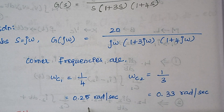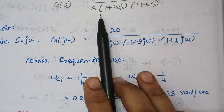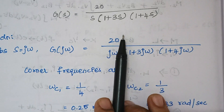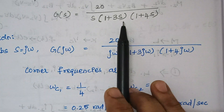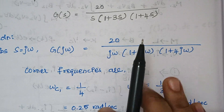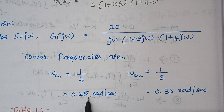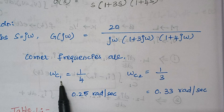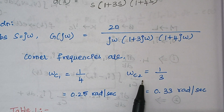As I already mentioned, based upon the corner frequencies we have to assign the names ωc1 and ωc2 based on their magnitude, not depending upon the order of the terms in the expression. So here 0.25 is the least value, so we name it ωc1, and 0.33 we name ωc2.